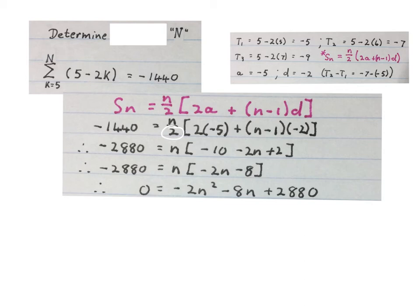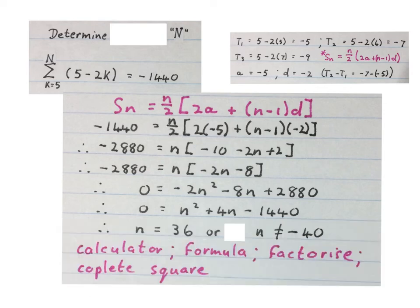Now we solve for n. To simplify it a bit, you may divide by a minus 2 right through the equation. You find these two answers by either using the calculator or the quadratic formula or you factorize it or you do the completing of the square.